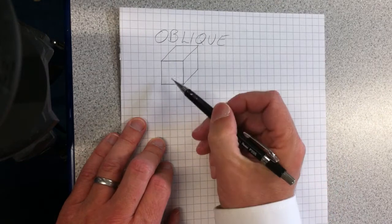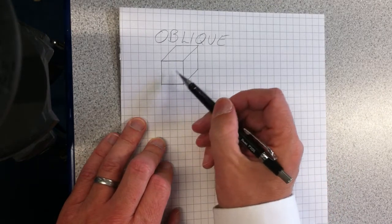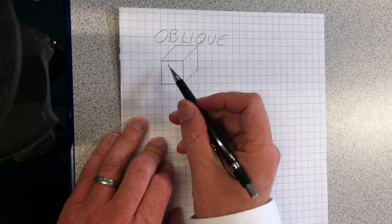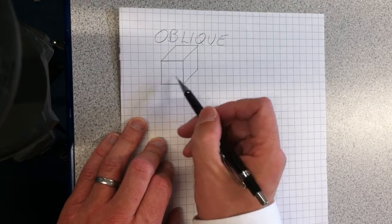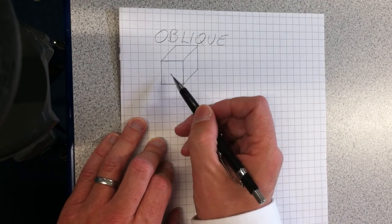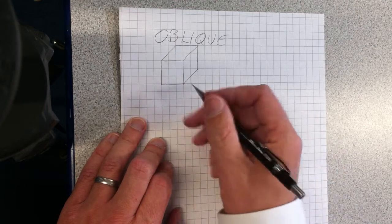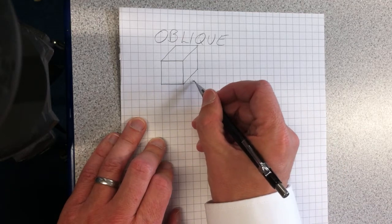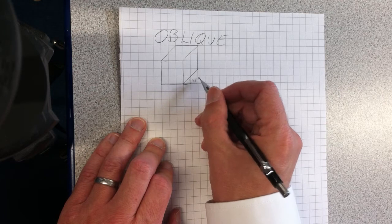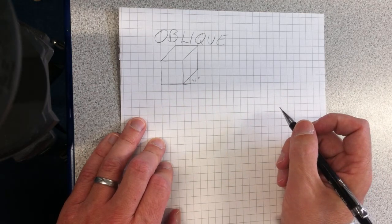You'll notice with oblique that this surface is the closest thing to you. With other drawing styles, you need to look for where the closest part of the object is towards you. This is the face, the front face, and this line here is 45 degrees from the horizontal line.